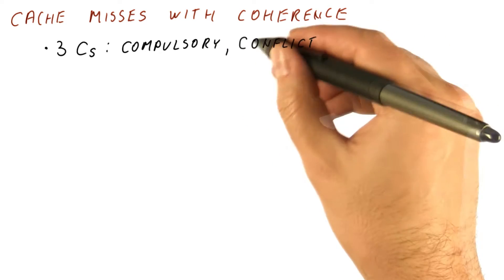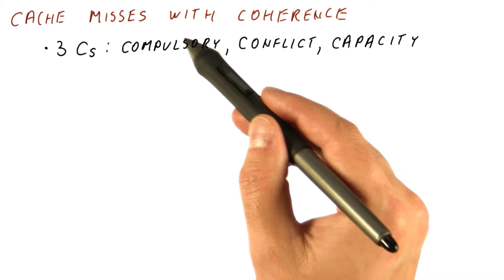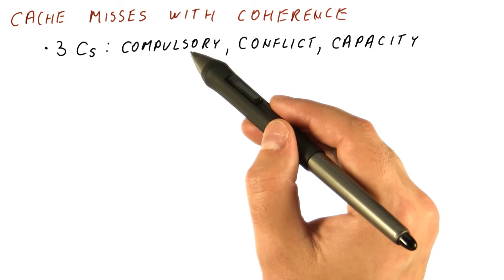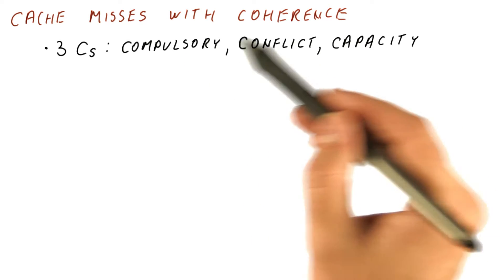Compulsory misses, conflict misses, and capacity misses. Remember that compulsory misses occur because we're accessing the block for the first time. Since it was never in the cache, we have to have this miss.